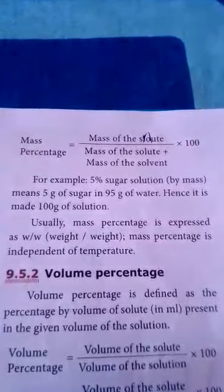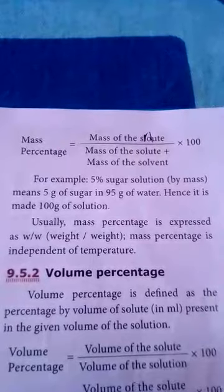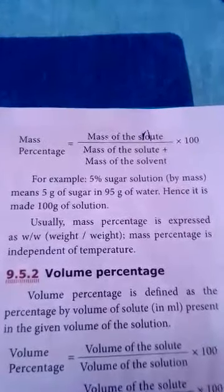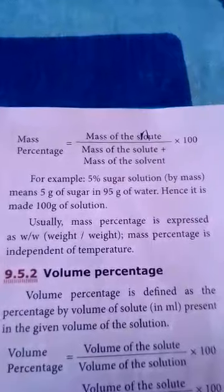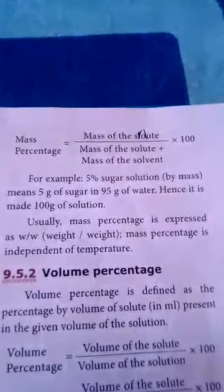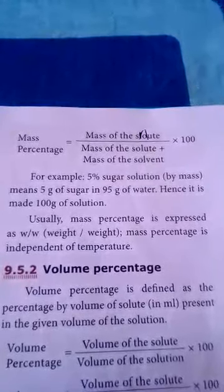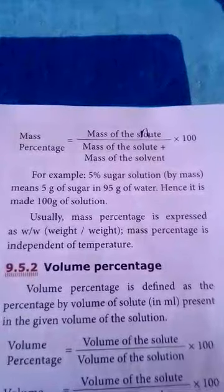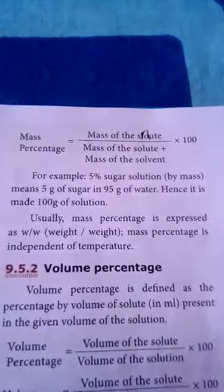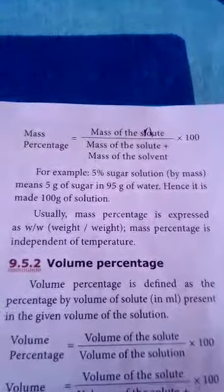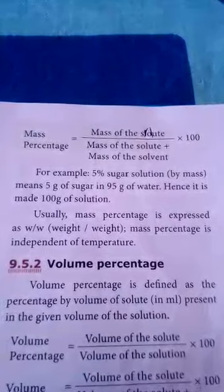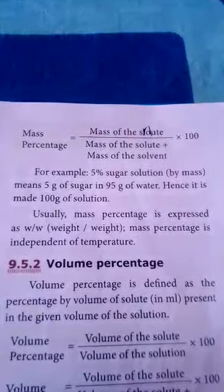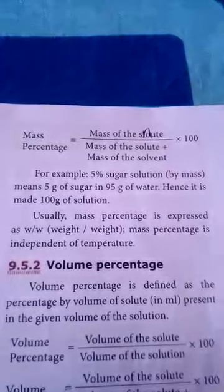For example, a 5% sugar solution by mass means 5 grams of sugar in 95 grams of water. Hence, it makes 100 grams of solution. Usually, mass percentage is expressed as W by W — weight by weight. Mass percentage is independent of temperature.